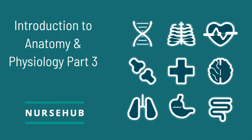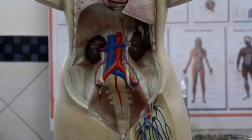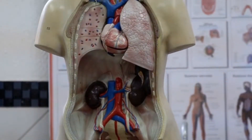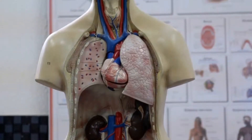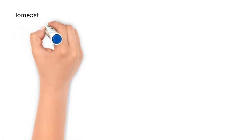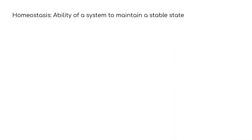Hi, Dr. Bruce here for Nurse Hub. In this video, I will cover homeostasis. Homeostasis is important to know since there are thousands of feedback systems in the body that keep it alive. Let's begin with the meaning of homeostasis. Homeostasis is the ability of a system to maintain a stable state.